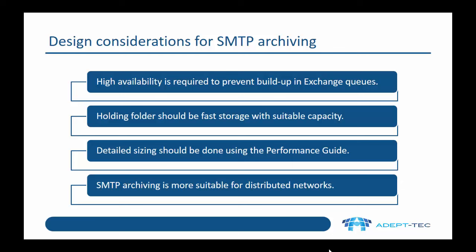The holding folder, which stores the EML files before they're archived by the SMTP archiving task, should be fast storage with suitable capacity. We reckon that it should have capacity for about five days worth of emails. Detailed sizing for the whole architecture should be done using the enterprise vault performance guide, which has a lot of details about ingest rates and so on.